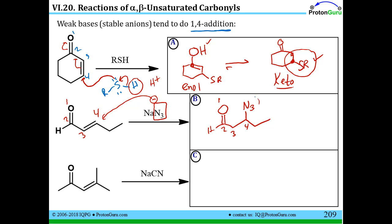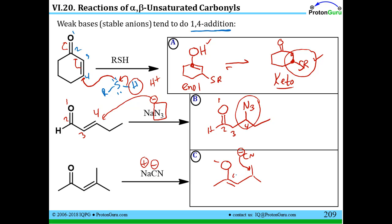We've created chiral centers in these cases, so you'll have racemic mixtures because the starting materials aren't chiral. For example C, we take the CN- part of the ionic compound — it's not a strong base, so it adds at the 1,4 position. Push the electrons up, form a new bond, attach cyanide there, protonate, and the product tautomerizes. Here we did not create a chiral center because there are two methyl groups on the same carbon as the CN.